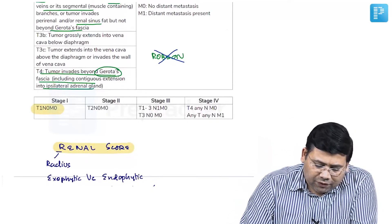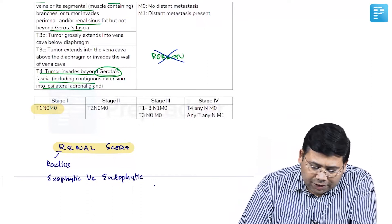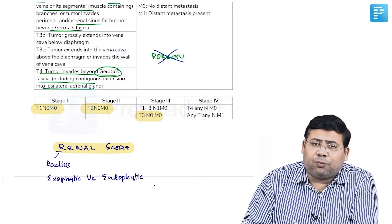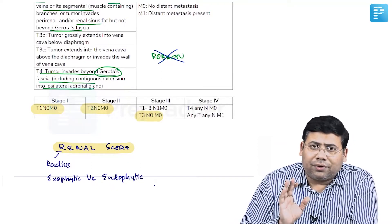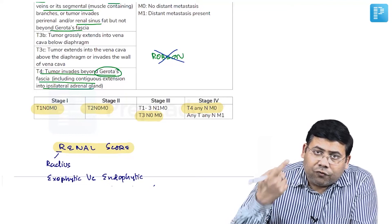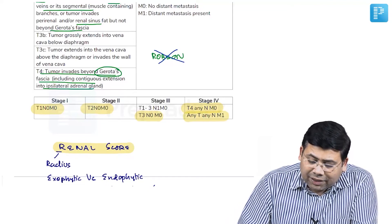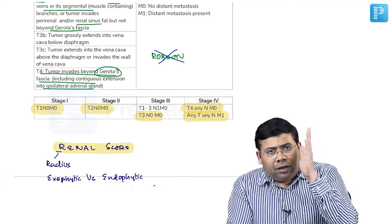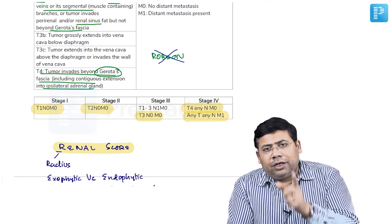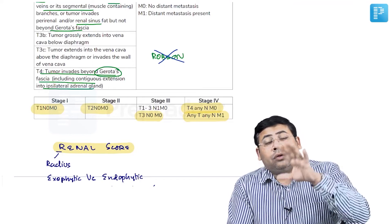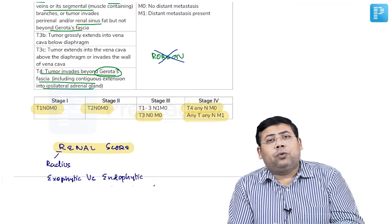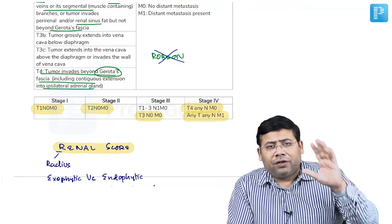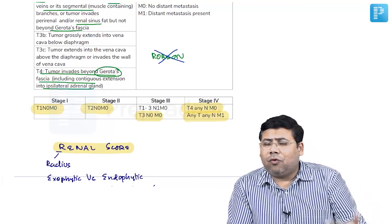Stage 3 is T3 N0 M0, or any T up to T3 with N positive. Stage 4 is T4 (any N, M0) or any T with M1. This is very simple: T1 N0 M0 is stage 1, T2 N0 M0 is stage 2, T3 N0 M0 is stage 3 or T1 to T3 with N positive, and T4 or any T with metastasis is stage 4.